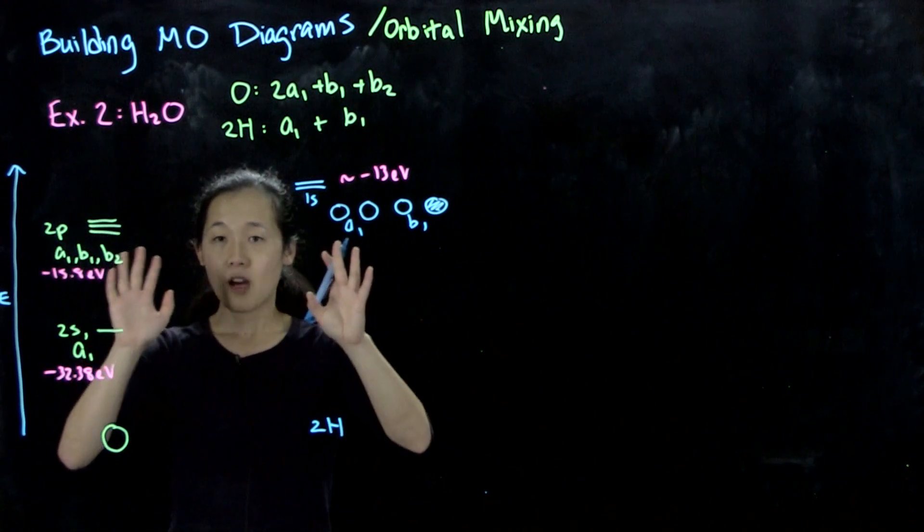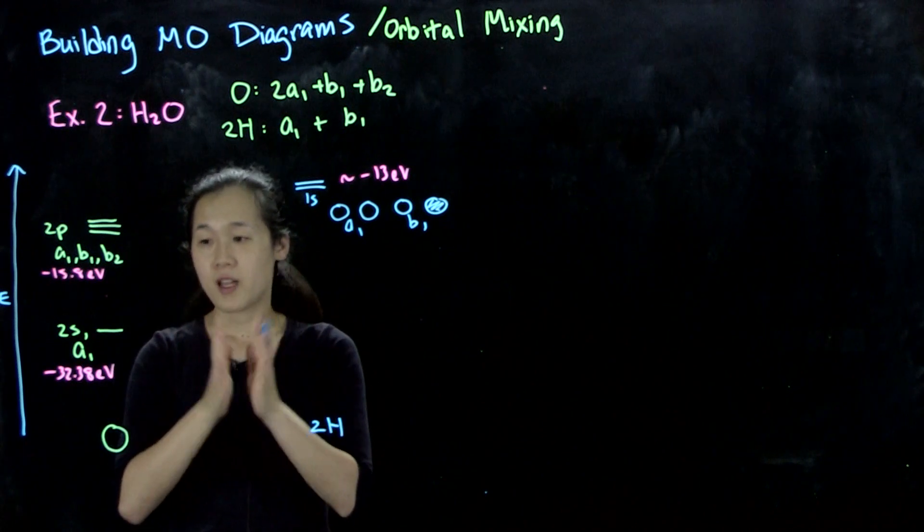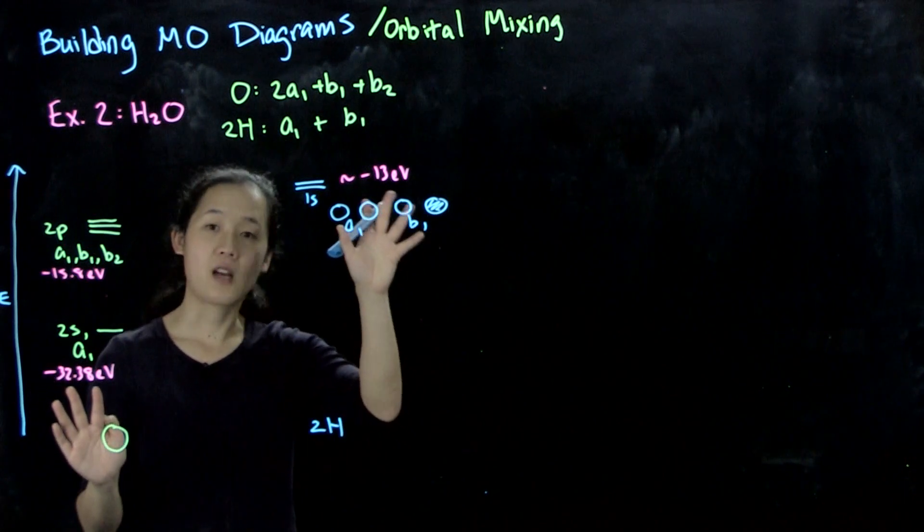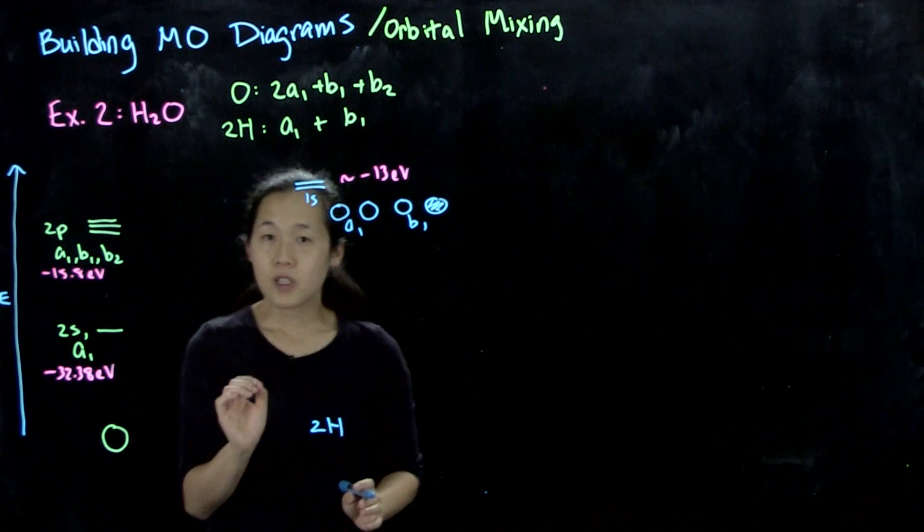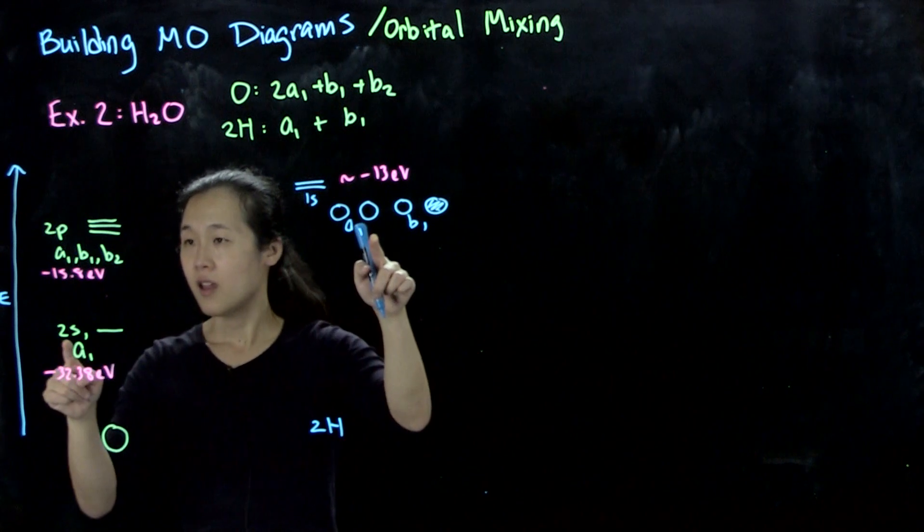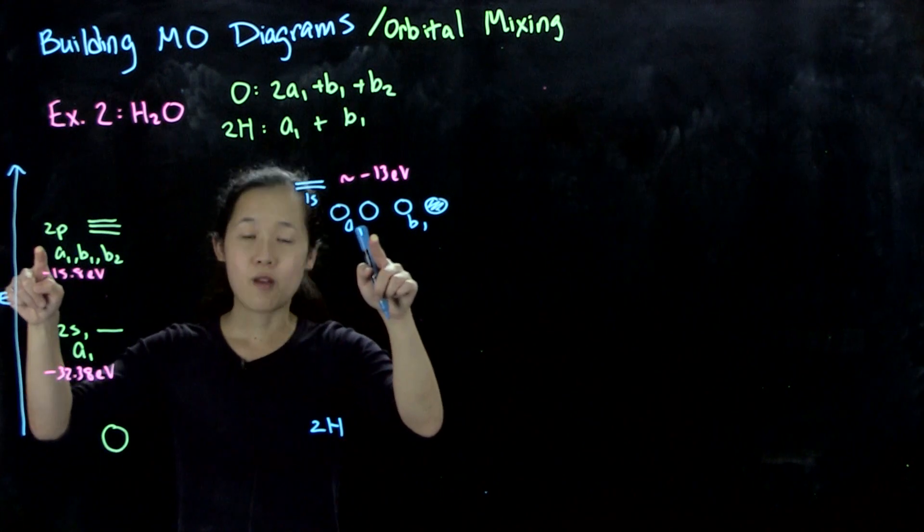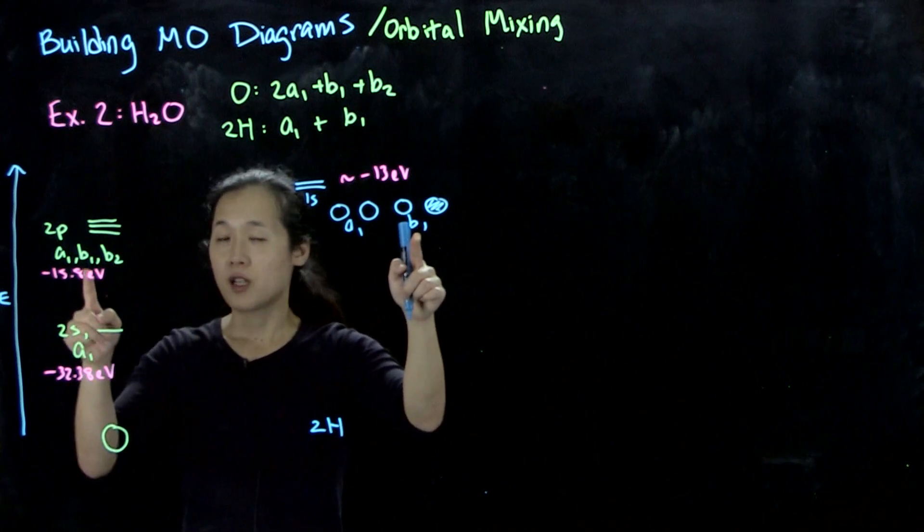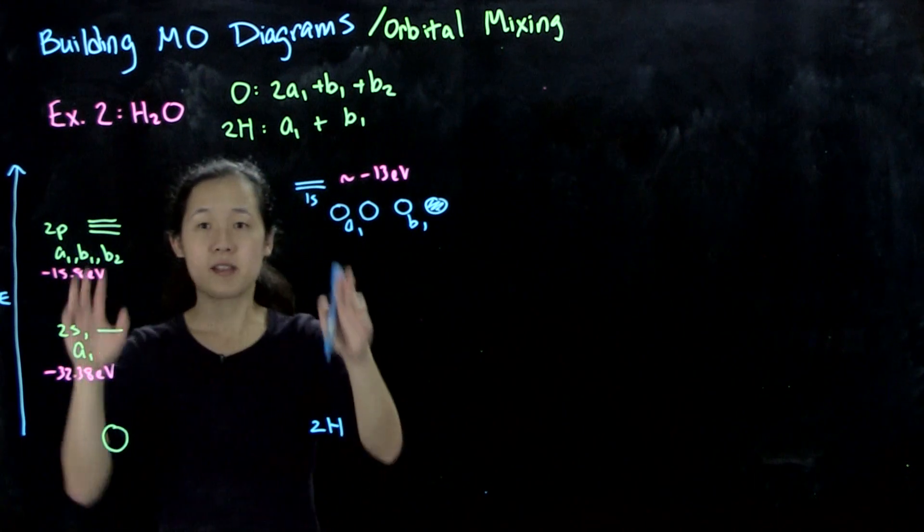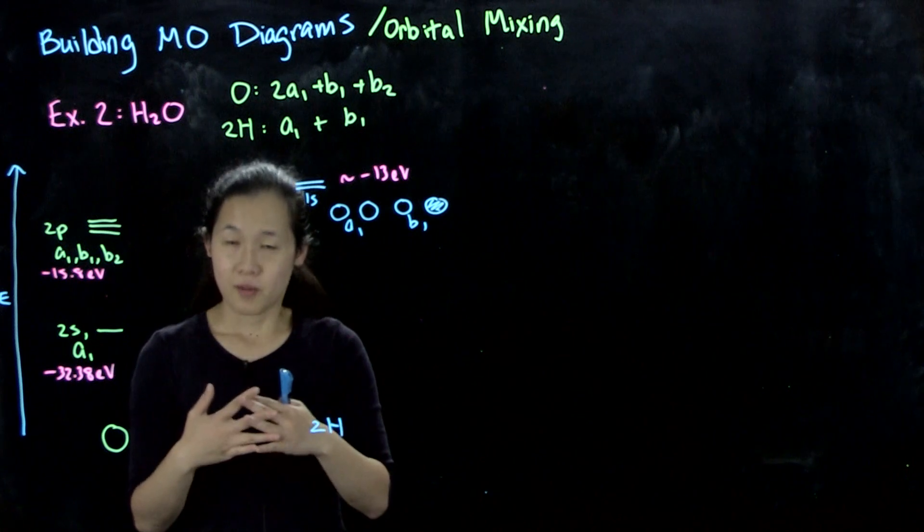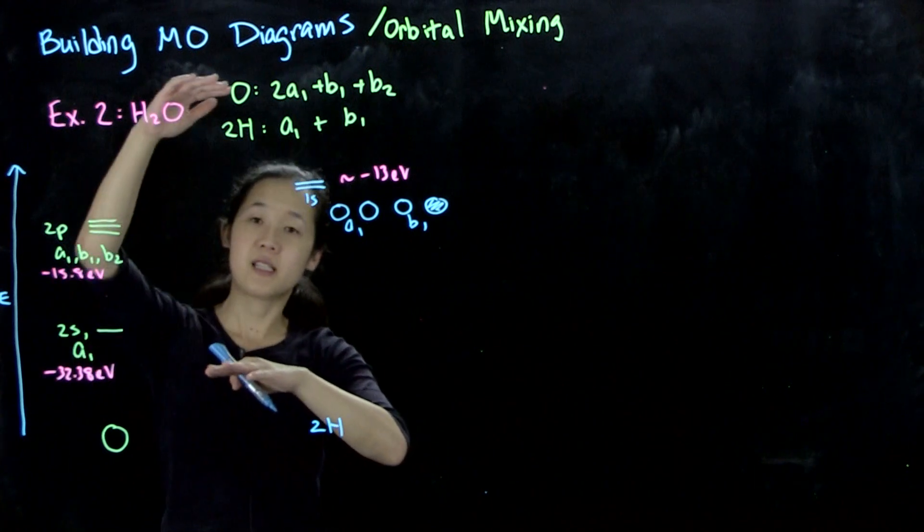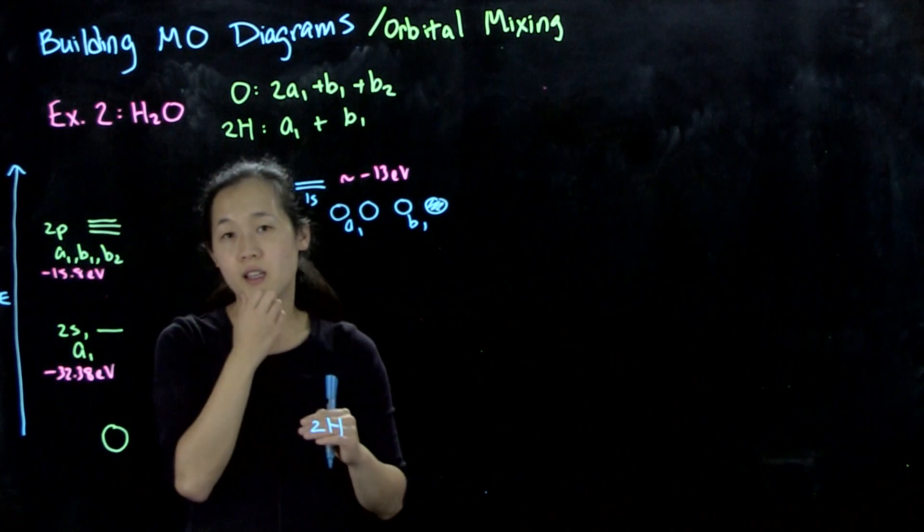Now that we have our atomic orbitals, we can find what the molecular orbitals should be by interacting the central atom atomic orbitals with our SALCs of the hydrogen atoms. Keep in mind, only SALCs of the same symmetry can interact. This a1 SALC can only interact with this a1 orbital and the pz a1 orbital. This b1 orbital can only interact with this b1 orbital here.